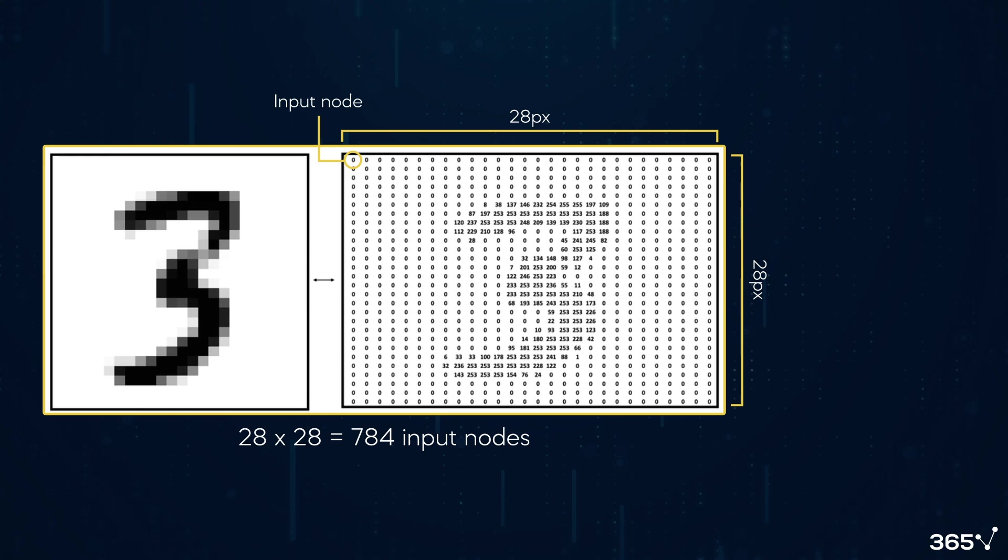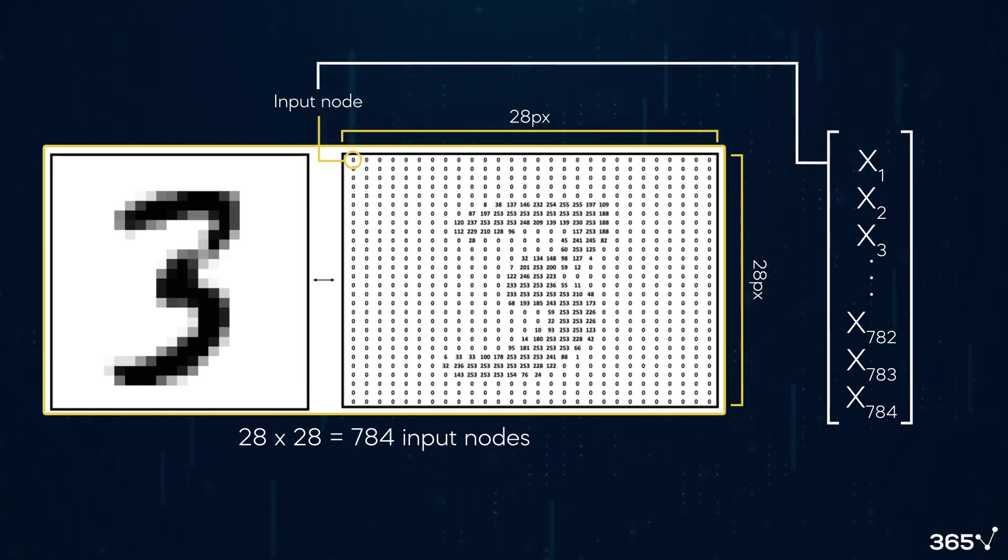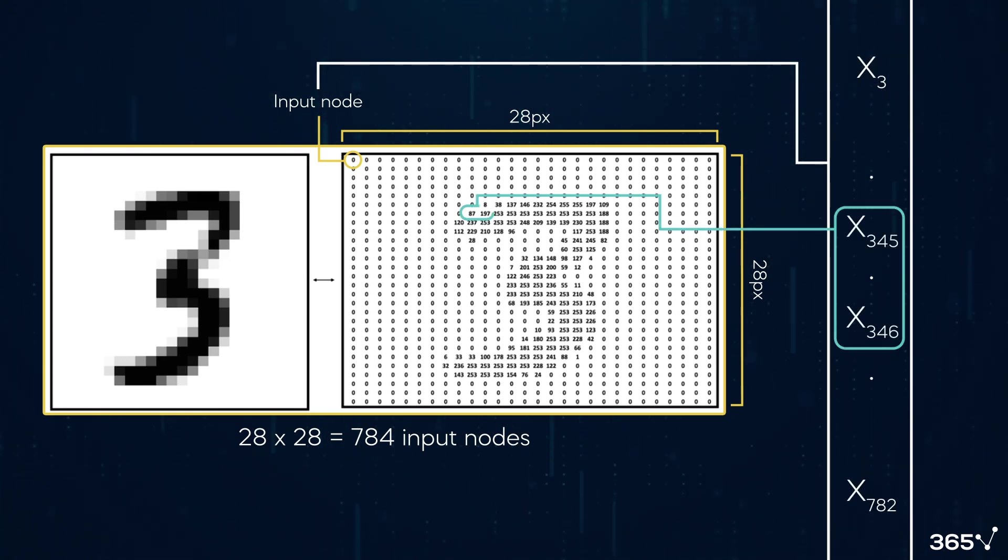Imagine that the 784 input nodes are stored as a vector inside the neural net to form the input layer. Each of the 784 input nodes contains a number, based on how bright or dark it is. Here, 0 represents white, while any value greater than 0 indicates a color other than white. We call this number activation.